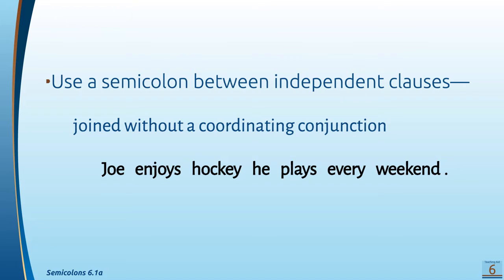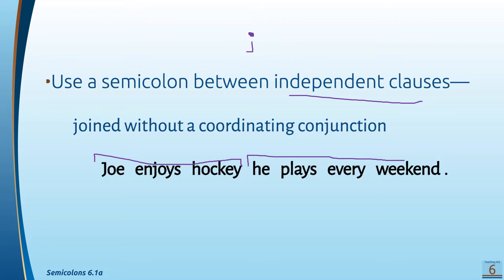A semicolon is a dot on top of a comma — that's a semicolon. So we use a semicolon between independent clauses, which means a simple sentence that is joined without a coordinating conjunction. For example: 'Joe enjoys hockey. He plays every weekend.' Here's one sentence — Joe enjoys hockey — and here's the next sentence — he plays every weekend. So you have two sentences there.